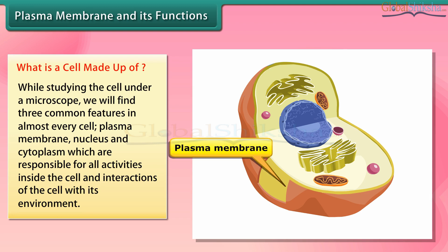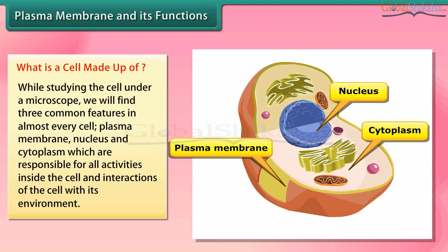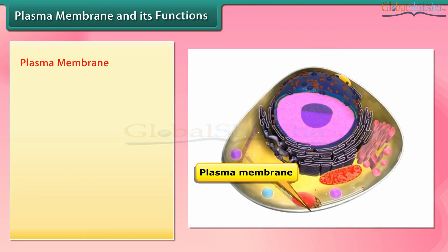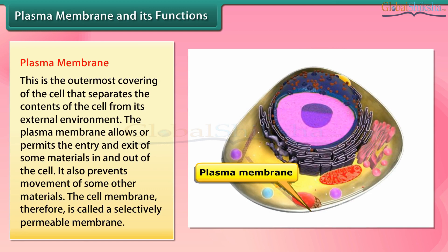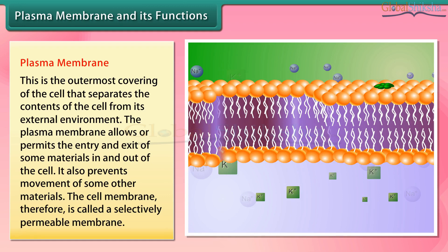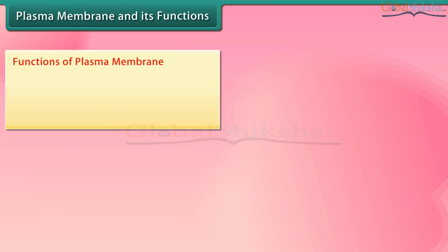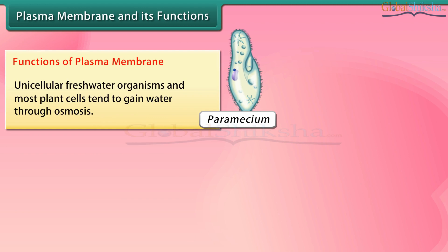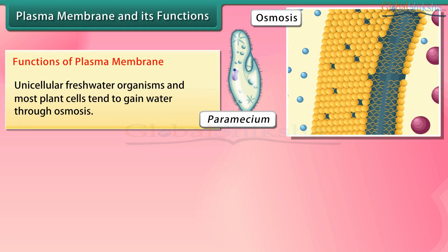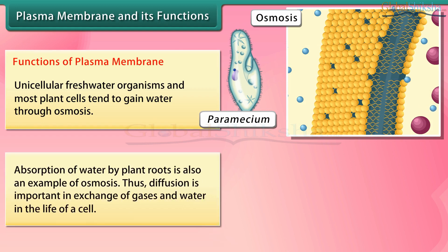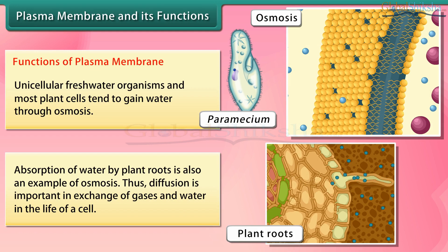While studying the cell under a microscope we find three common features in almost every cell: plasma membrane, nucleus, and cytoplasm, which are responsible for all activities inside the cell and interactions of the cell with its environment. The plasma membrane is the outermost covering of the cell that separates the contents of the cell from its external environment. It allows or permits the entry or exit of some materials in and out of the cell.